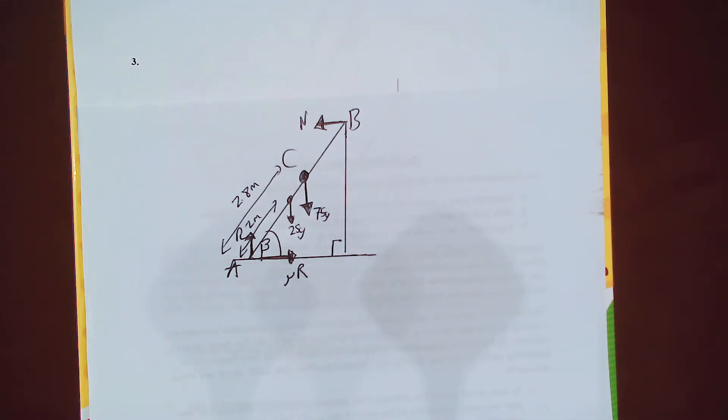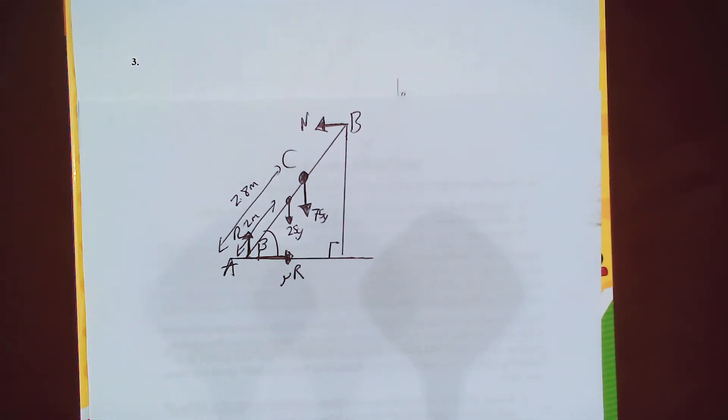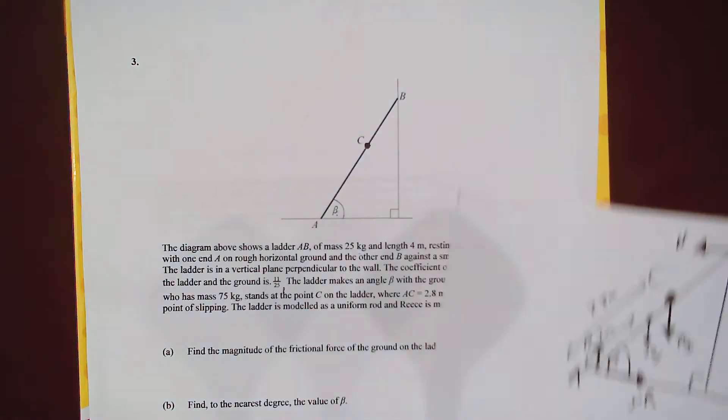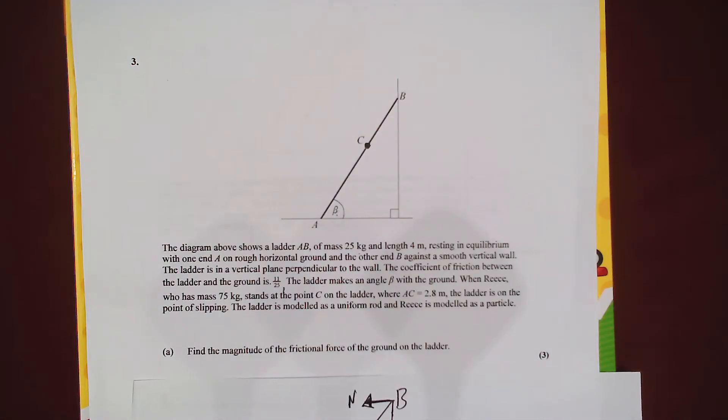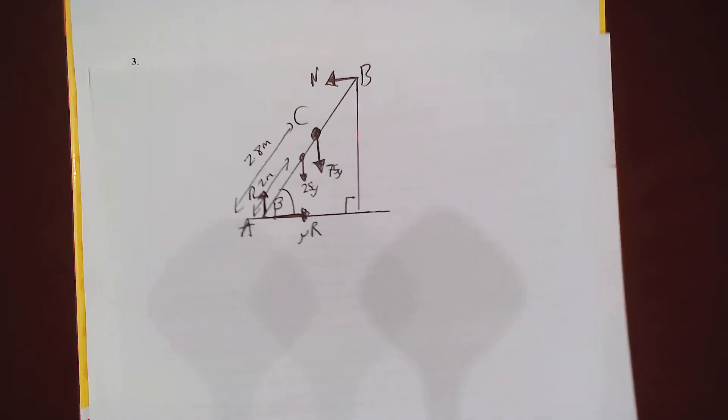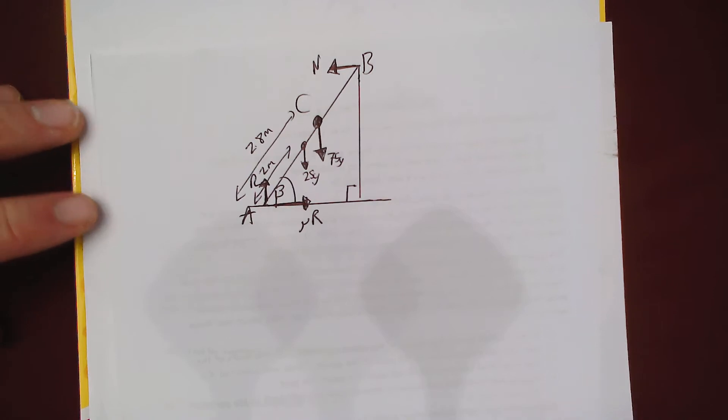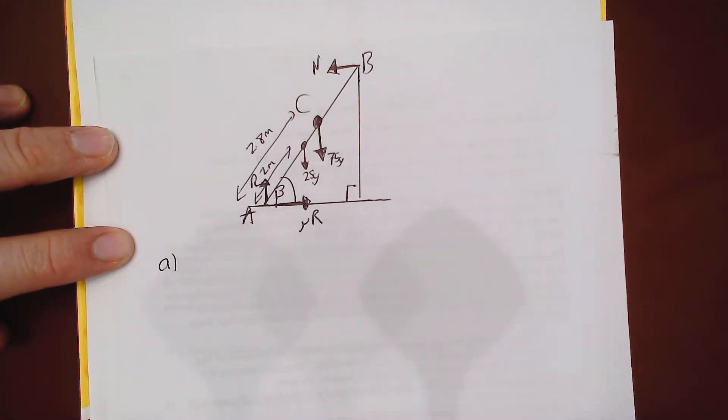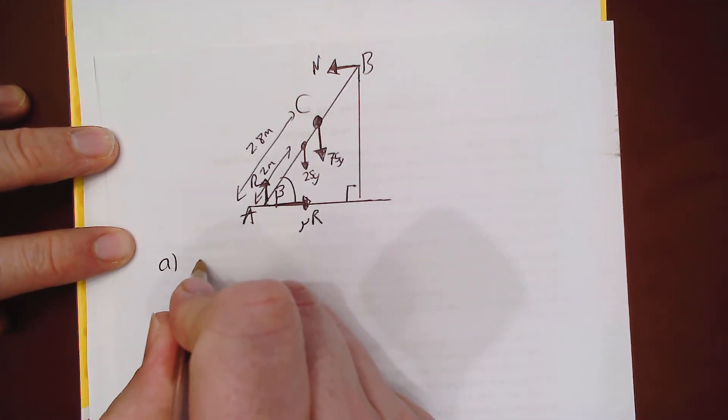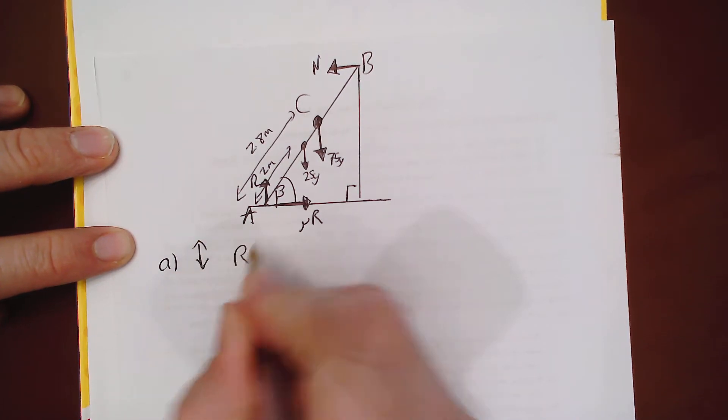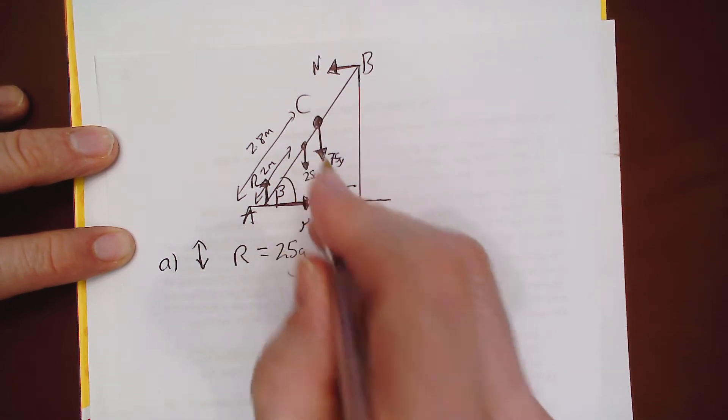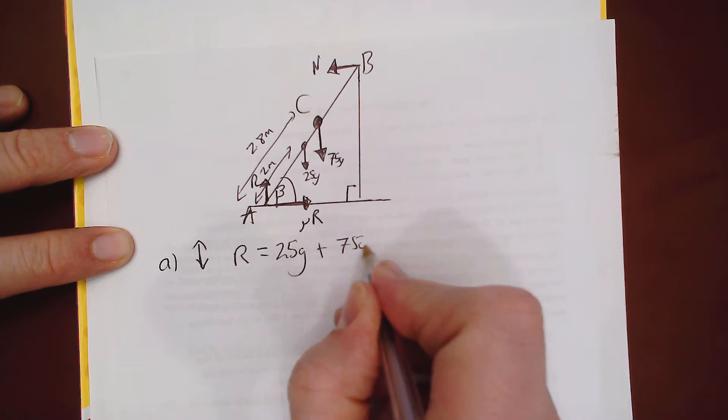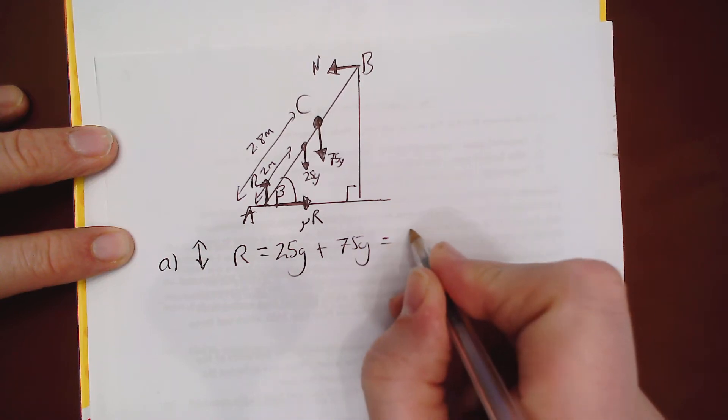So our first problem, we've produced a nice diagram which is a good start. Our first problem is to find the magnitude of the frictional force. Now it's mu R. So let's look at the forces. Let's go up and down. So I've got R going up and that equals 25g which goes down plus 75g that goes down. So that is 100g. So up and down R equals 100g.